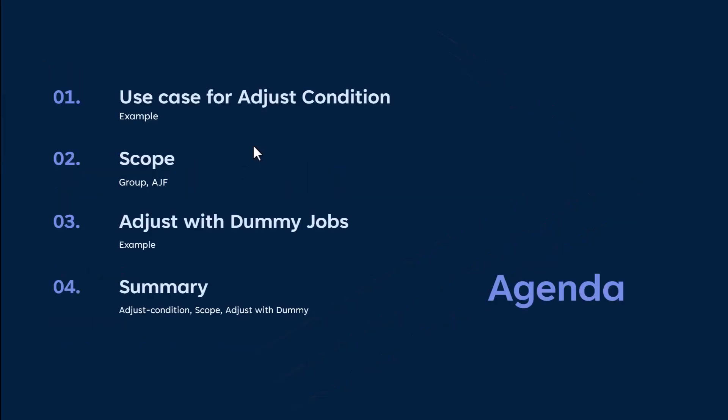Let's go over the agenda for this video. First, we'll cover several use cases where this feature is needed. Second, we'll discuss the available options related to the scope of this feature. Third, we'll explore an additional use case where adjust condition doesn't preserve the job flow and how the adjust with dummy option solves this problem. Finally, we'll summarize the key considerations when using adjust condition.